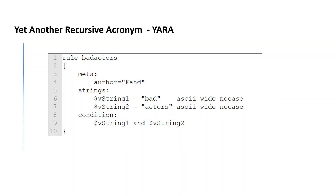The condition section is the only mandatory one. It contains a boolean expression that determines the result. For example, in this example, if both vstring1 and vstring2 are true in a file, then this rule will be true for that file.